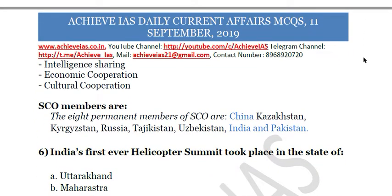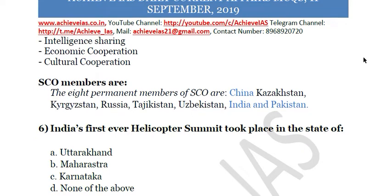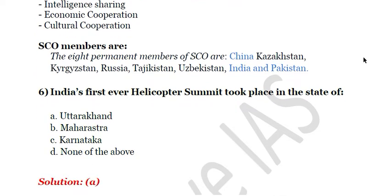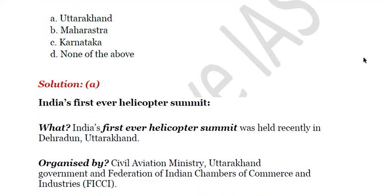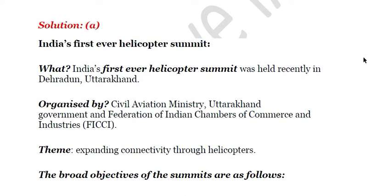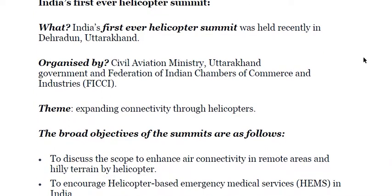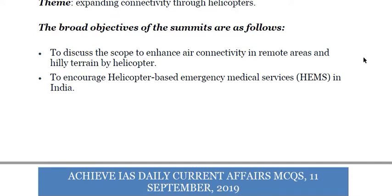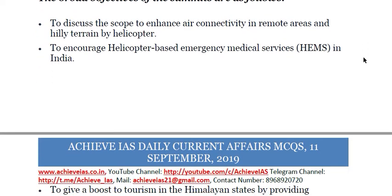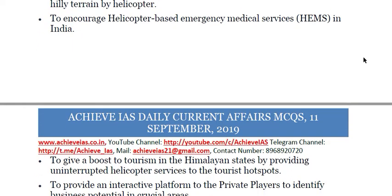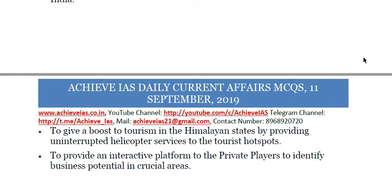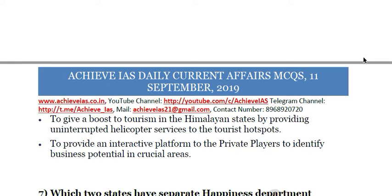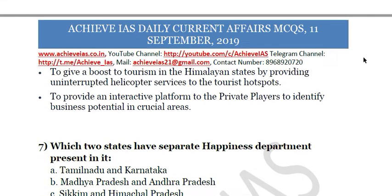India's first ever helicopter summit took place in which state? A — Uttarakhand, B — Maharashtra, C — Karnataka, D — none of the above. The answer is A, Uttarakhand. It was held in Dehradun, Uttarakhand. It was organized by the Civil Aviation Ministry, Uttarakhand government, and the Federation of Indian Chambers of Commerce and Industries. The theme was 'Expanding Connectivity Through Helicopters.' Its broad objectives were to discuss the scope of enhancing air connectivity in remote and hilly terrains by helicopter, encourage helicopter-based emergency medical services, boost tourism in mountain states, and provide a platform for private players to identify business potential.